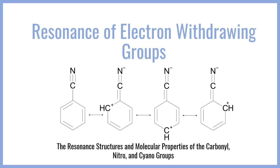We're going to be looking at how those structures withdraw electron density into themselves and how they affect the properties of the rest of the molecule. Let's go ahead and get started. So first off, let's go ahead and consider the carbonyl group, which is probably the most prolific electron withdrawing group.